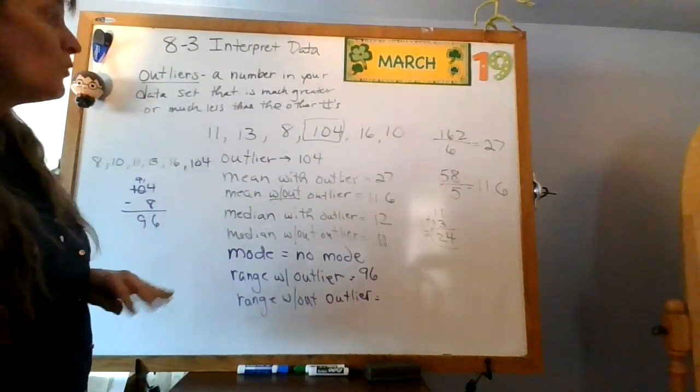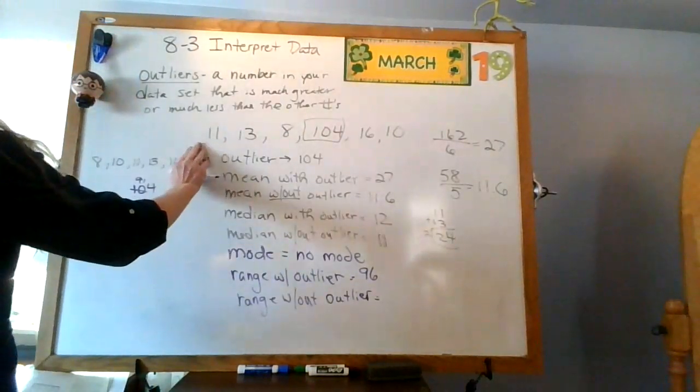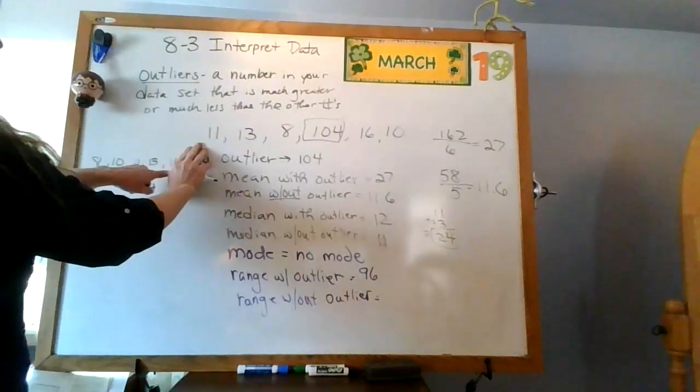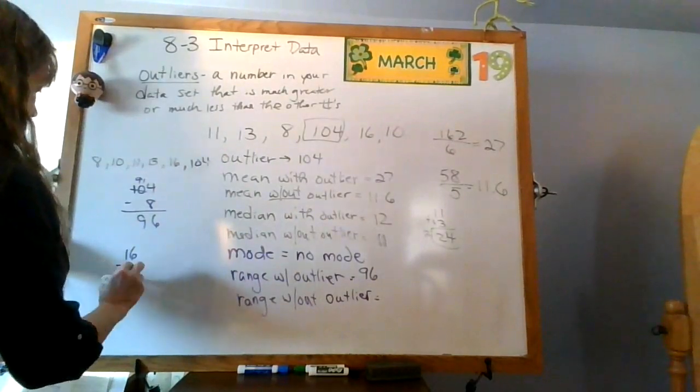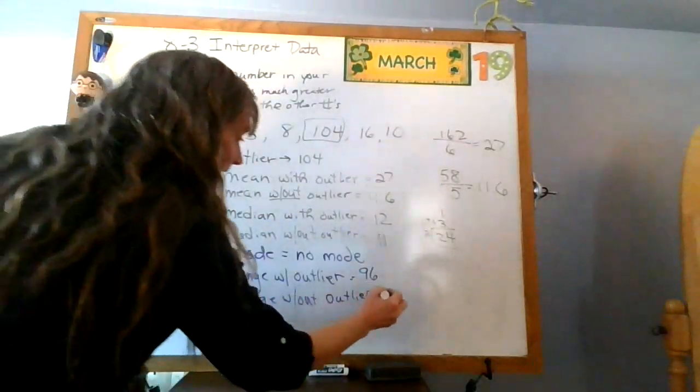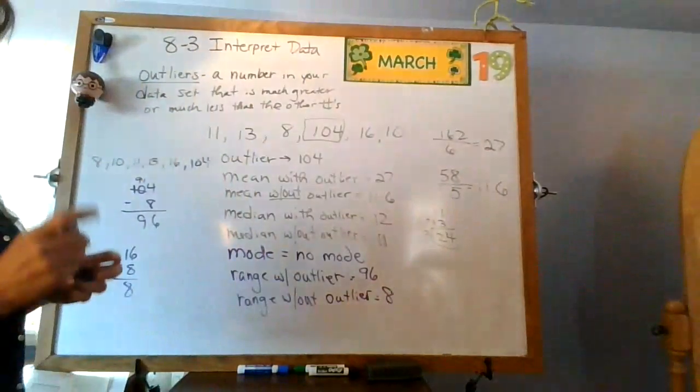All right, let's look without the outlier. So now I get rid of that and my highest number looks like it's 16. So 16 minus 8 is 8. So my range without the outlier is 8.